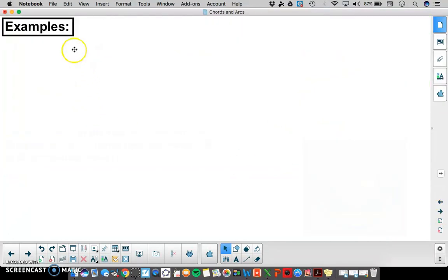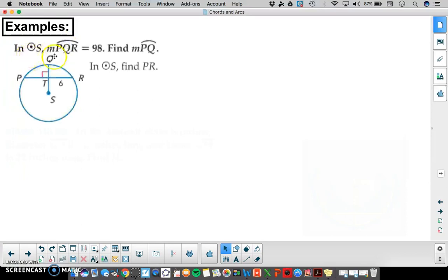Lastly, we have some examples. This first example, in circle S, the measure of arc PQR is 98. Find the measure of arc PQ. And in circle S, find the measure of segment PR.